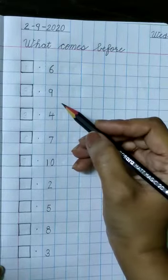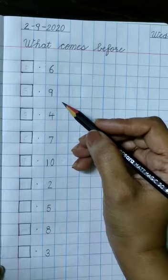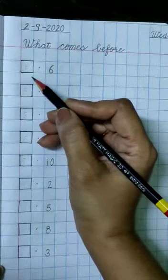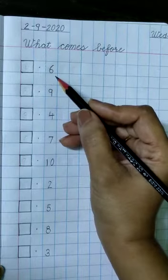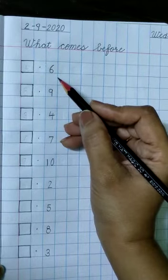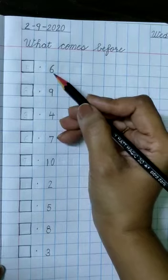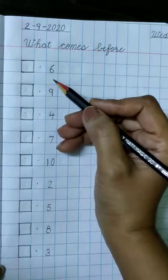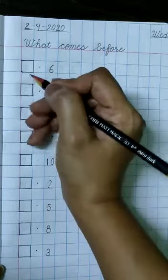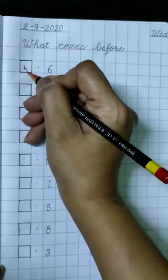And we are writing before numbers. So first we will make a box. Then put a dot in second box and write number 6 in third box. Now what comes before 6? 5-6. 5 comes before 6. So write 5 in this box.